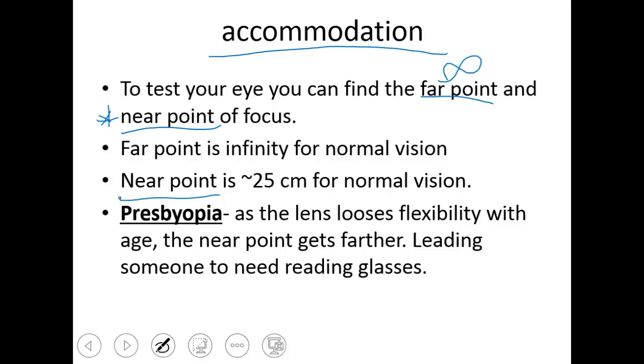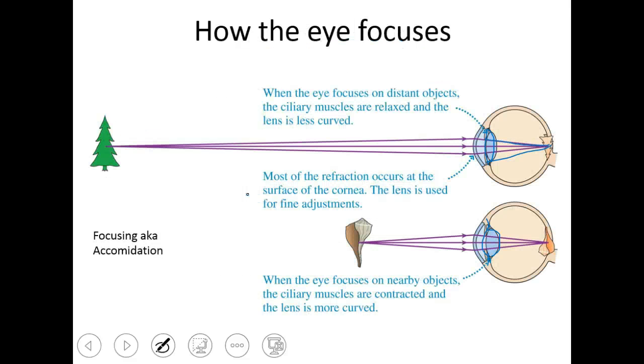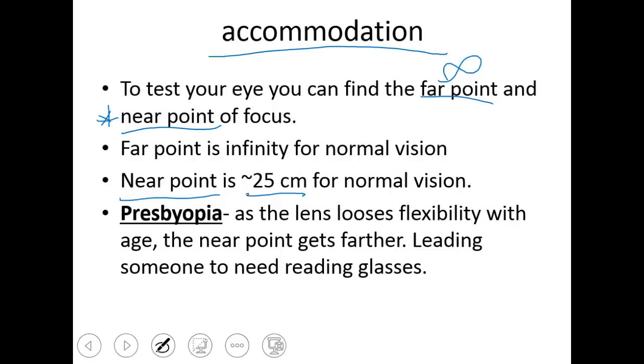Now, for normal, healthy vision, this is about 25 centimeters. For kids, it's a lot less. Kids can see much closer. But then as we get older and our eyes do this accommodation, they expand and contract and expand and contract, those little tendons and muscles in your eye actually wear out. And what we see is that your near point, as you get older, gets farther and farther as those muscles lose flexibility with age. And this is a condition called presbyopia.